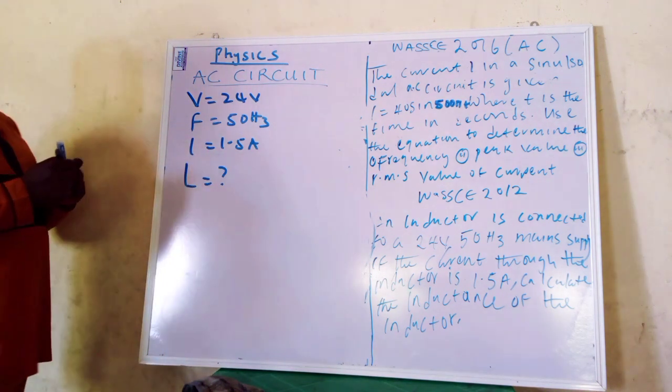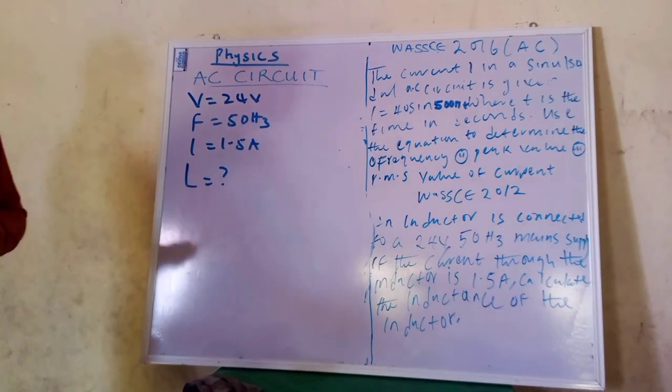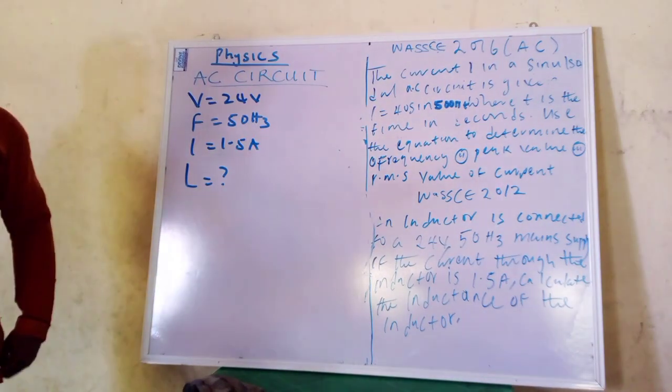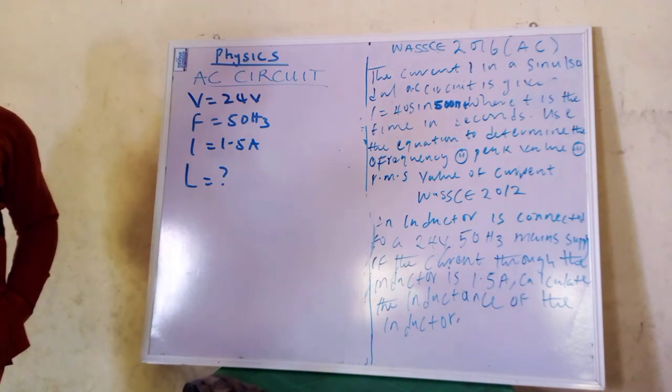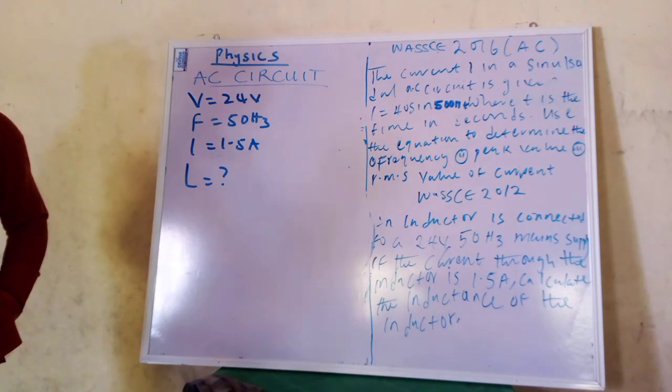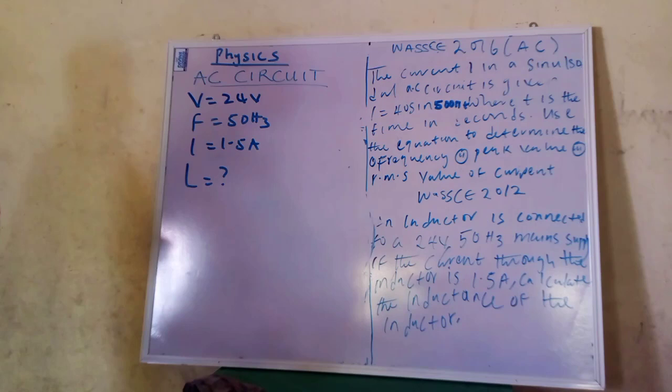I'm sure that's clear. It's L we are looking for, not XL. If it is XL, they will now ask us to find the reactance of the inductor or the inductive reactance. I repeat. If it is XL, they will say we should find the reactance of the inductor or inductive reactance. But here, it's L we are looking for.